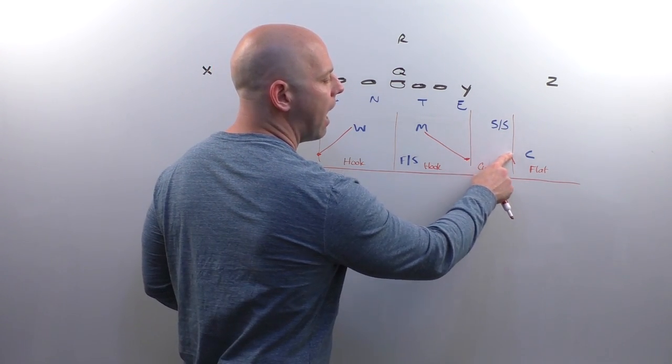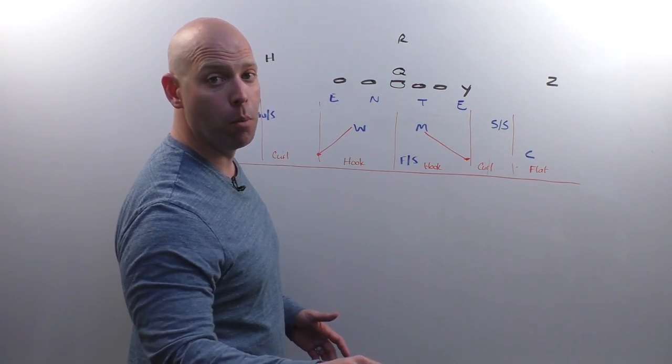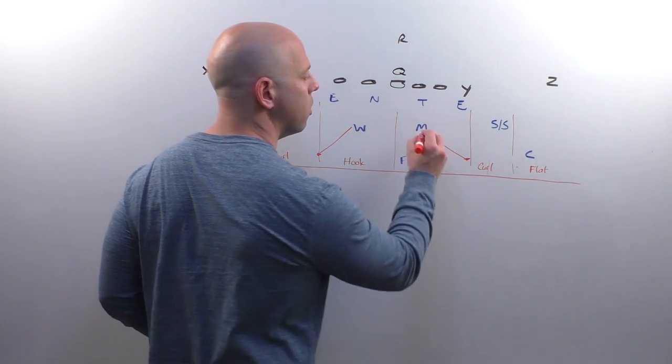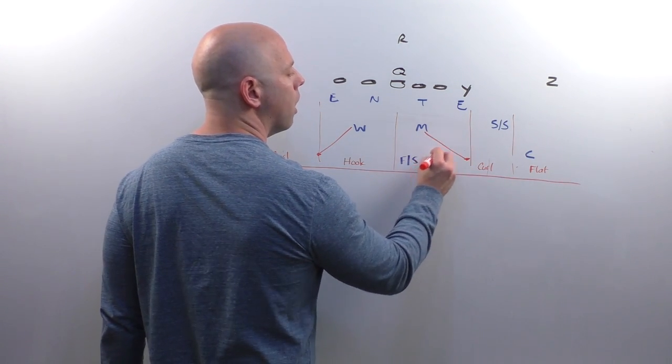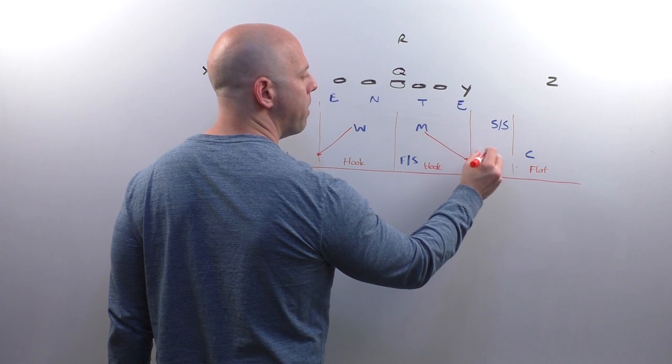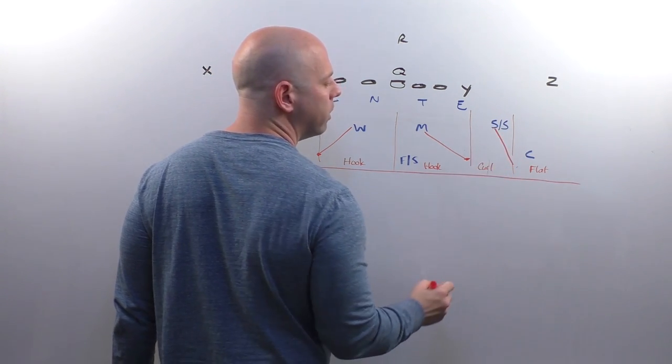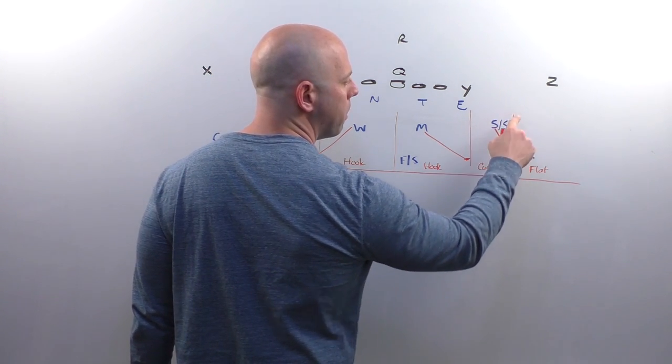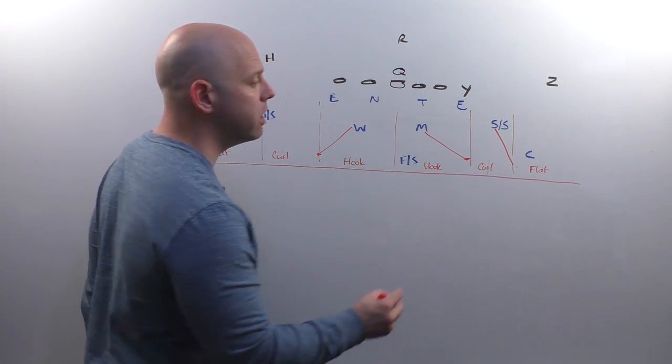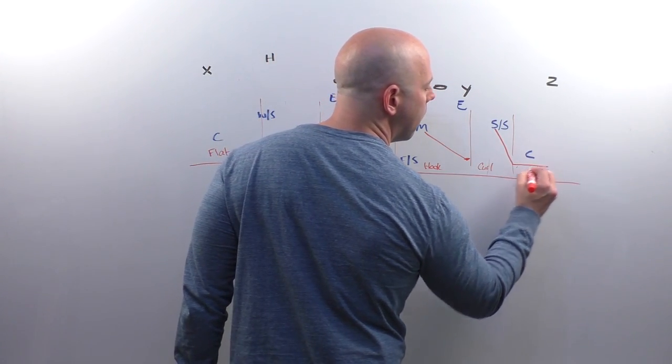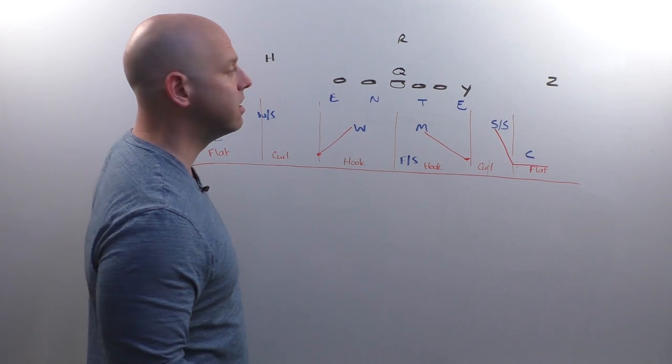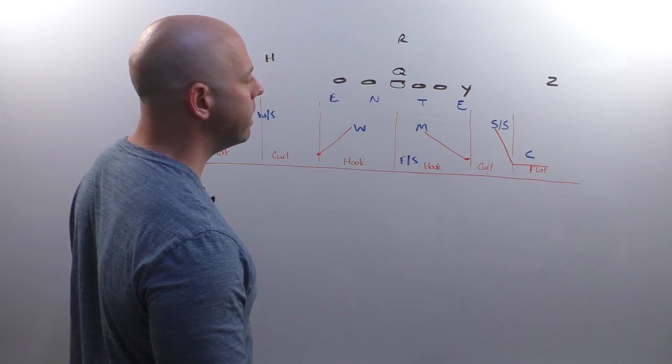With our younger guys, I will have them just take off to the top of the numbers right now and get straight to the flat zone. And we'll really make this mic more hook curl. But we're going to kind of give them help. And we're also going to cloud the actual curl zone. So we're going to drop to an area halfway between hash and numbers initially and then widen as is necessary as we see the play developing.